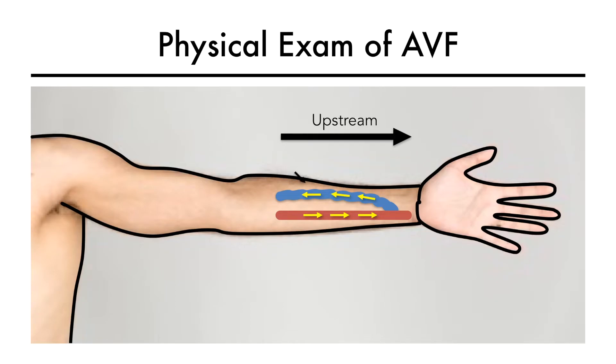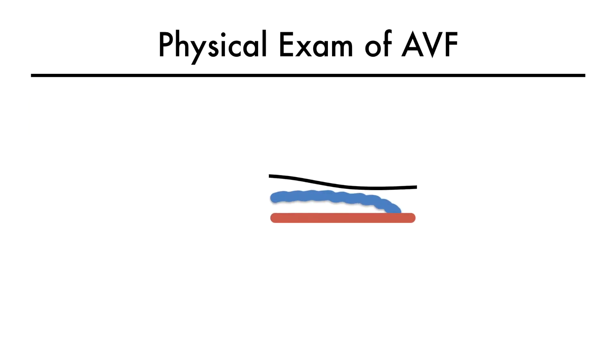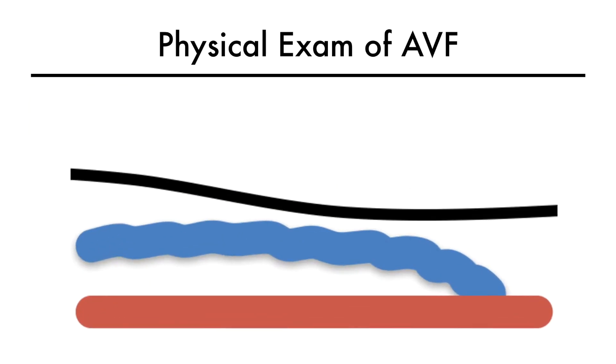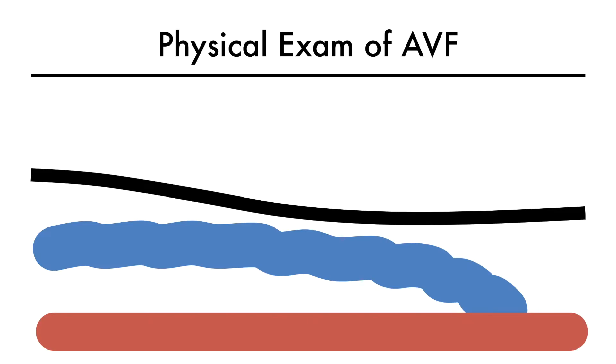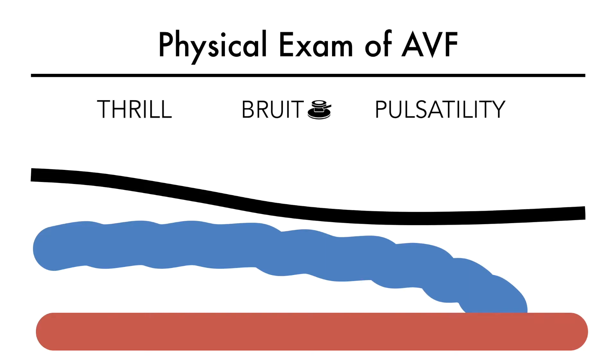Now let's take a closer look at a normal AV fistula. Let's start by reviewing three important features of a fistula: thrill, bruit, and pulsatility.